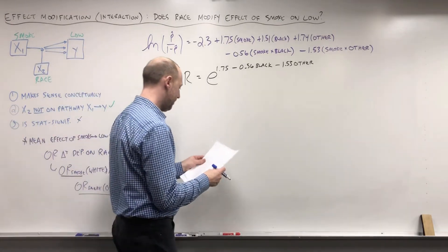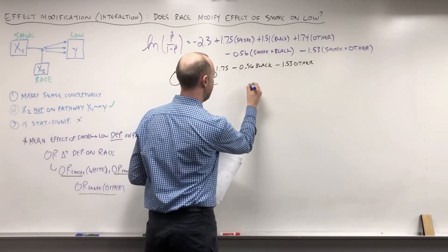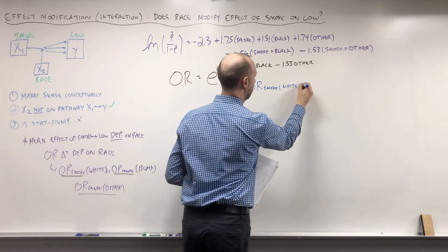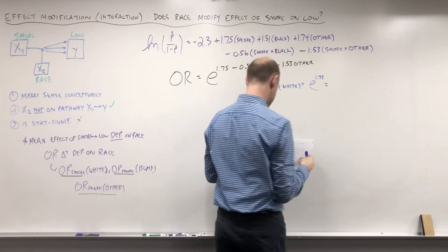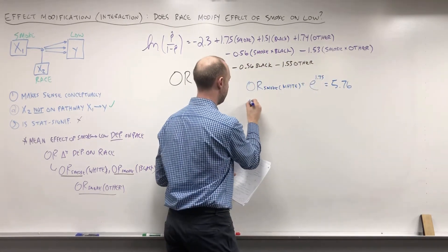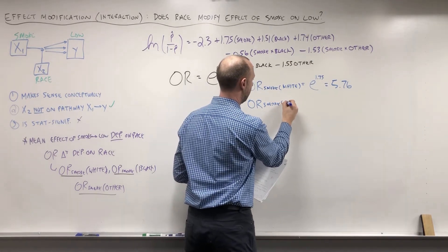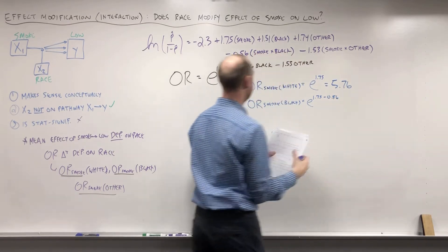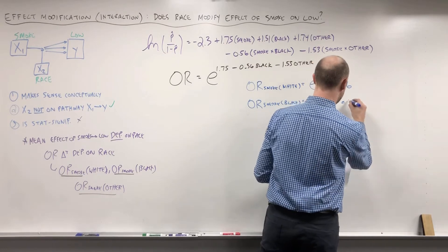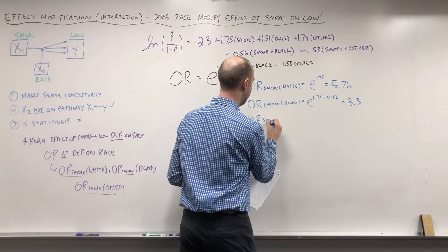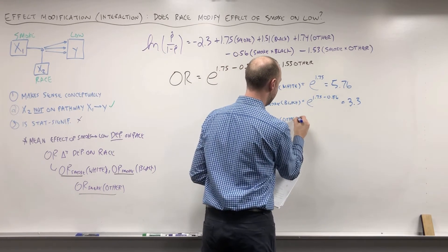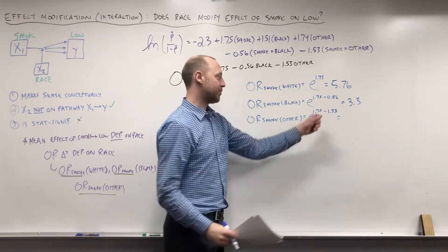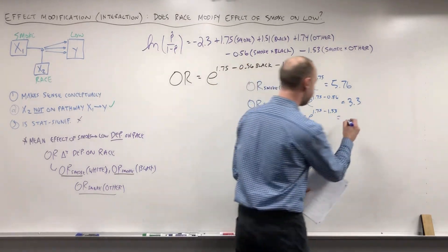Working these out: the odds ratio of smoking for white is e to the 1.75, which comes out to 5.76. The odds ratio of smoking for black is e to the 1.75 minus 0.56 — since the black indicator takes on the value of 1 — which comes out to 3.3. And the odds ratio of smoking for the category other is e to the 1.75 minus 1.53, which equals 1.25.